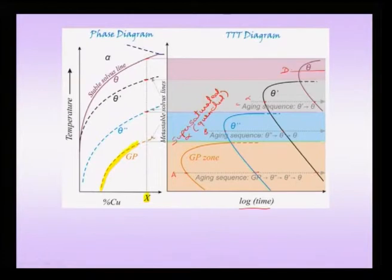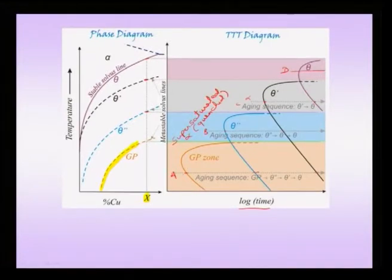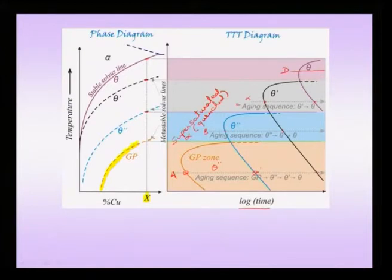In the regime between the theta prime solvus and the actual solvus line, aging along line C gives alpha → theta prime → theta at two crossing points. Aging along D gives the equilibrium theta phase directly. The transformation sequence can now be understood using this extended TTT diagram in which there are progressive transformations to multiple phases, each with different TTT curves — unlike the steel case where one curve showed gamma → alpha + Fe₃C.